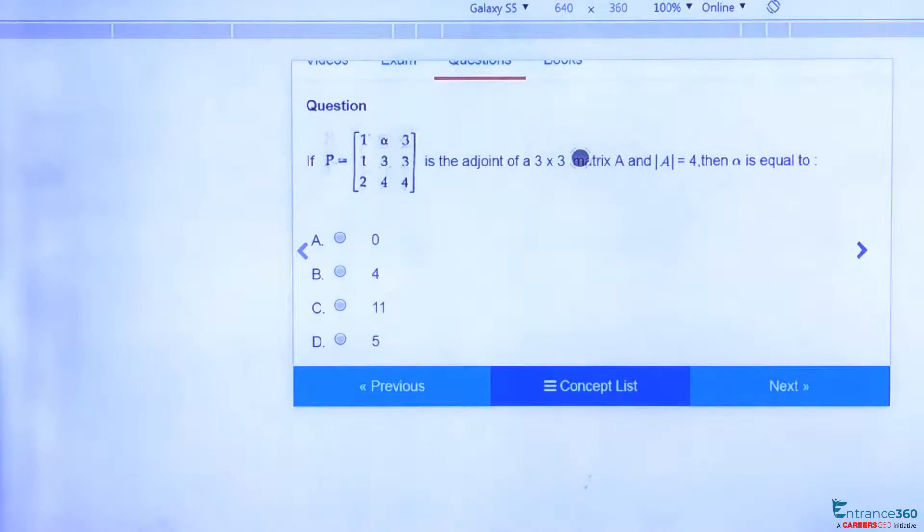So we have been given a matrix which they are saying to be adjoint of a matrix A, and we have been given |A| equal to 4. Then we need to find the value of alpha.